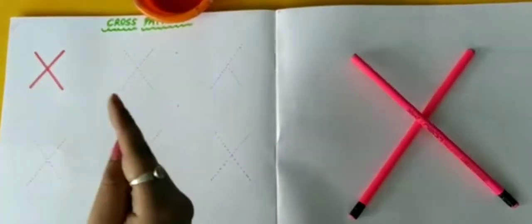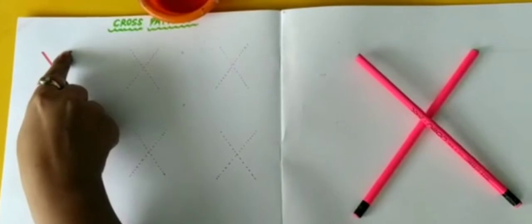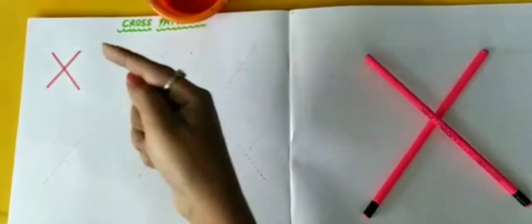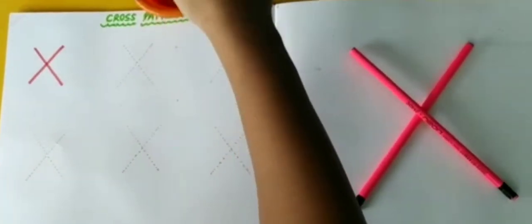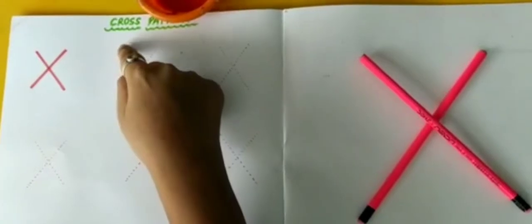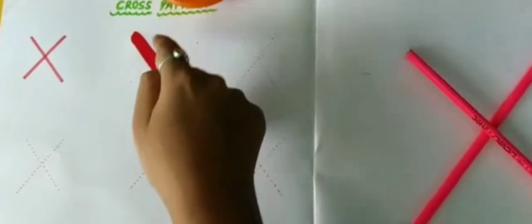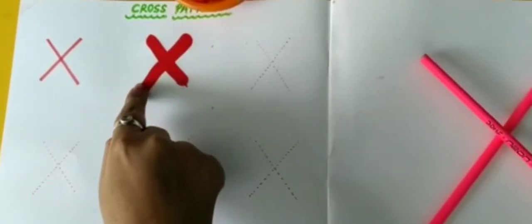See, now trace with me. Slanting line and opposite slanting line. Let's paint with finger. One slanting line and opposite slanting line.